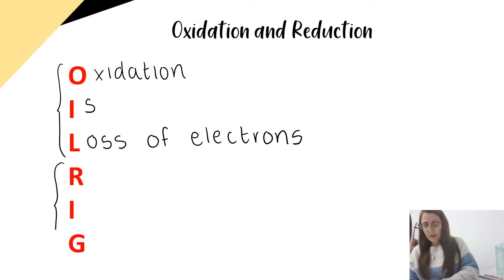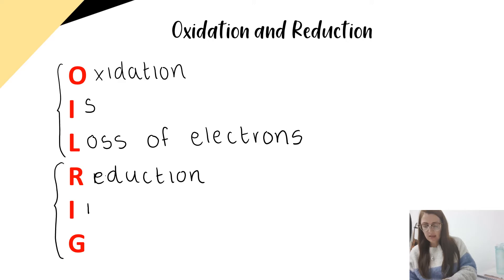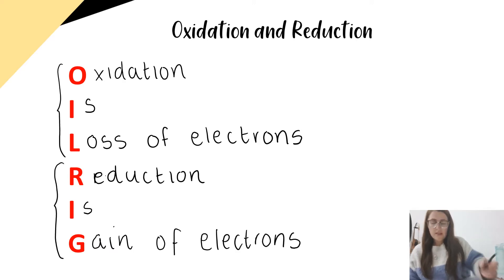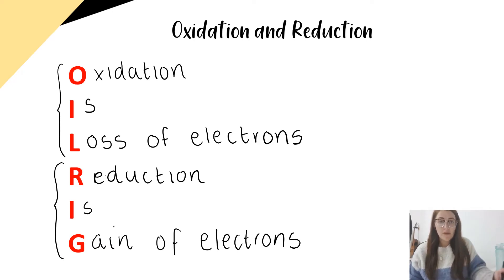The RIG part of the mnemonic stands for reduction as gain of electrons. So when something is reduced, that thing gains electrons. It's the opposite of oxidation, and oxidation and reduction always happen at the same time.